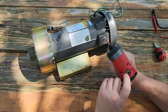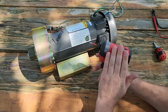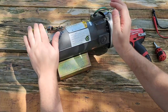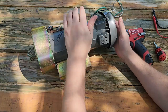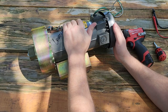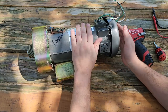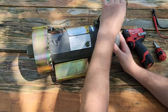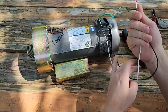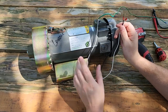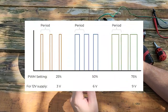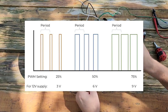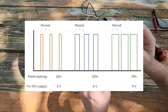Brushless motors let you control and monitor the speed and torque, whereas brushed DC motors - which is what we're talking about today - technically don't do any of that; they're kind of simple motors. With these brushed motors you change the speed based on changing the voltage or changing the pulse width modulation, the PWM, which is basically a square wave.